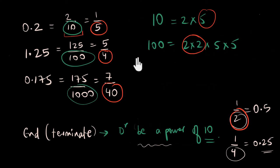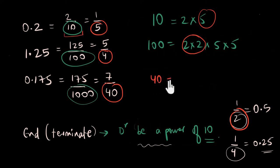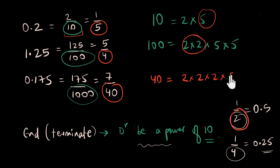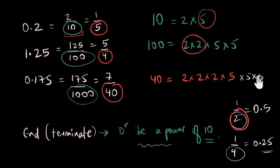For 4, that's 2 times 2, so multiply by 25 to get 100 — a power of 10. For 40, factorizing gives 2 times 2 times 2 times 5, which is 8 times 5. To make that a power of 10, multiply by 5 times 5, which is 25, giving us 1000. So any denominator made only of 2s and 5s can be converted to a power of 10.